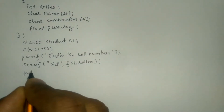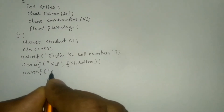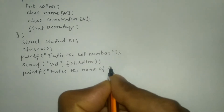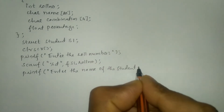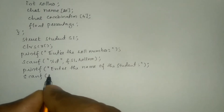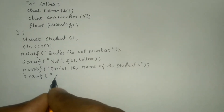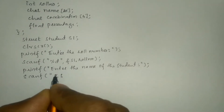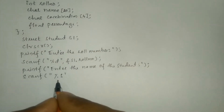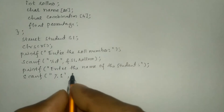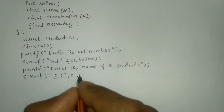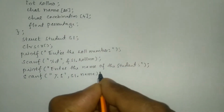Now we will ask the user to enter the name using a printf statement, writing enter the name of the student in double quotation marks and put semicolon. We will receive the input from the user through the keyboard using scanf. Here I'm going to write %s because this format specifier specifies a string type of data, comma s1 dot name, closing bracket, put semicolon.